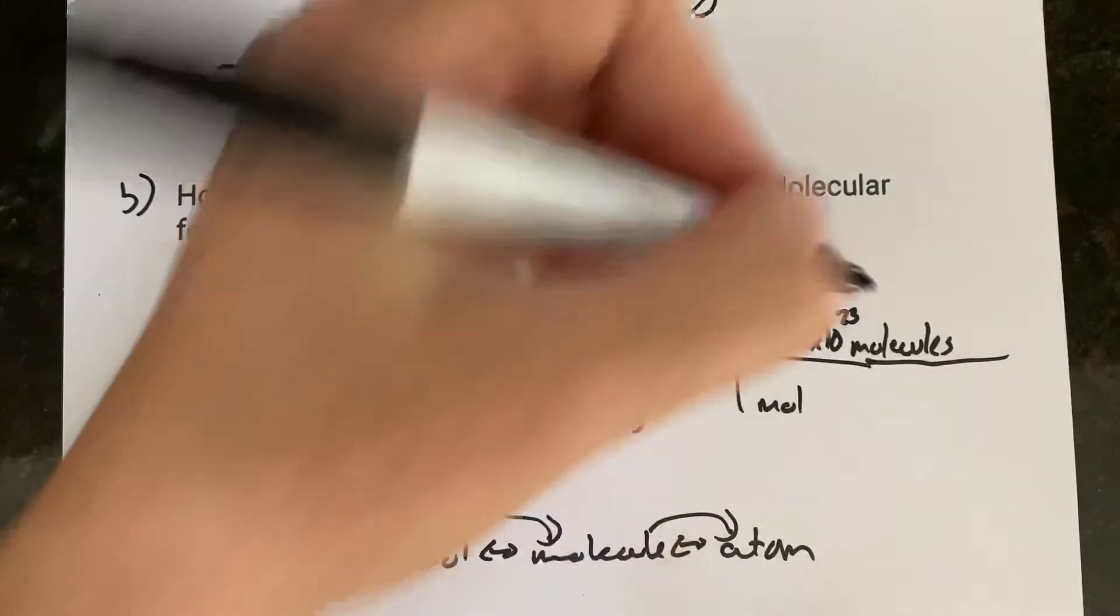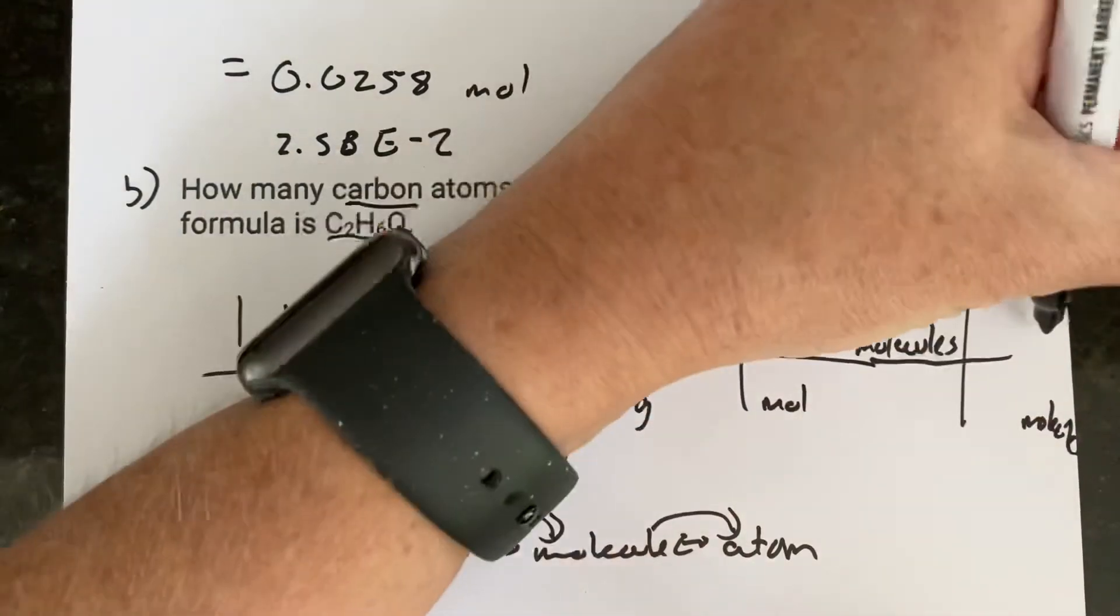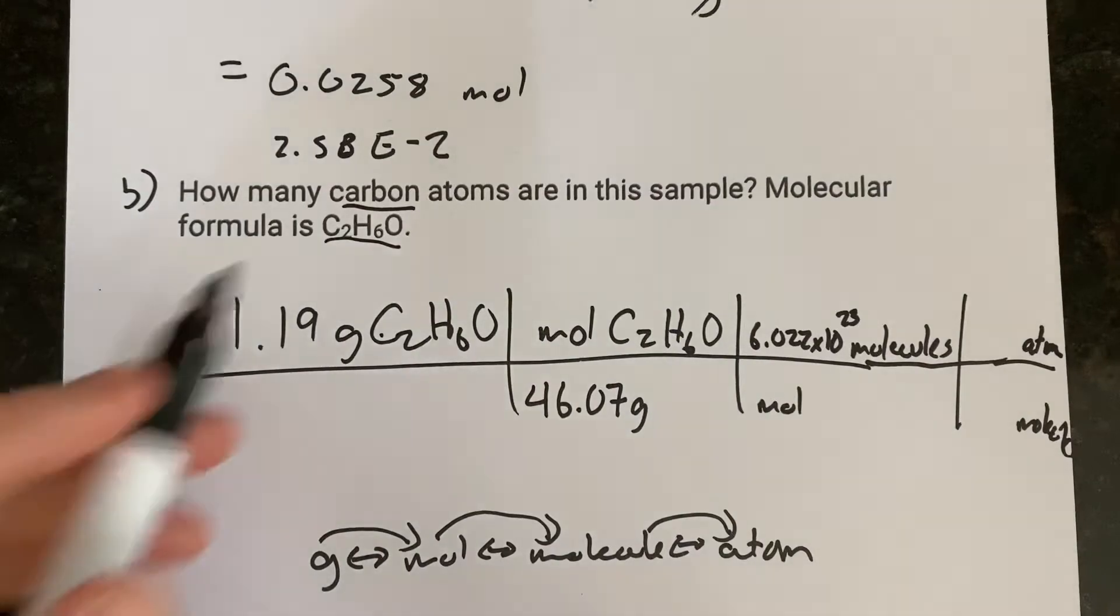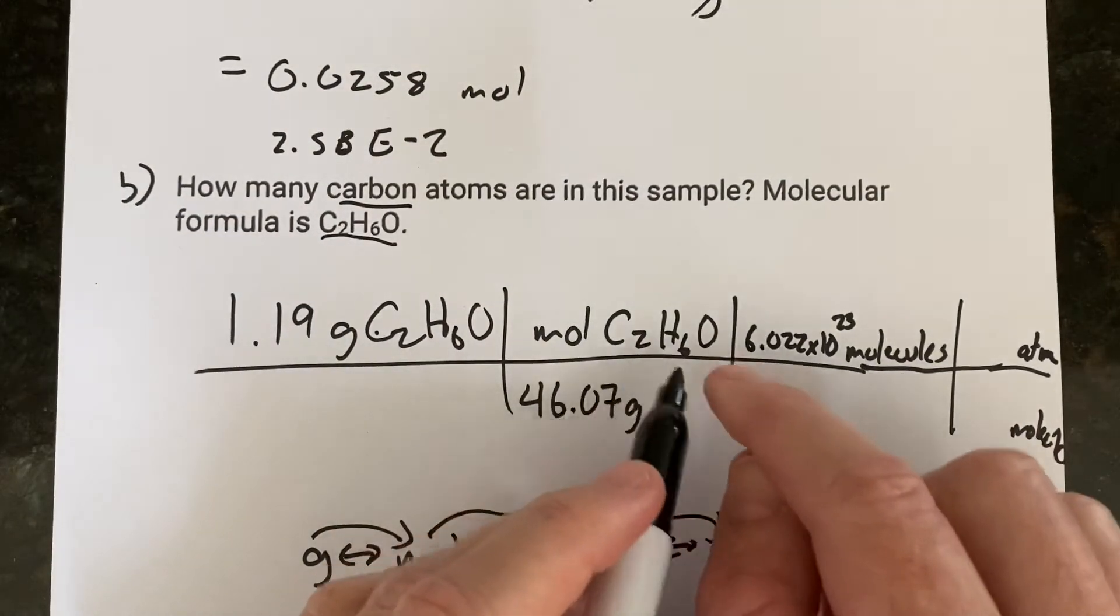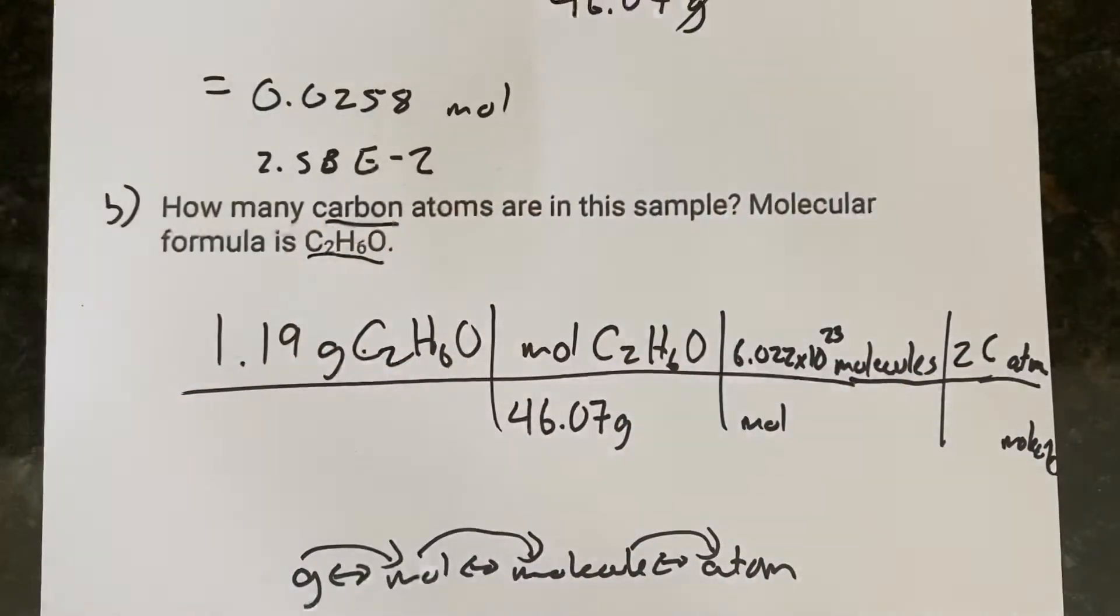All right, the next step, now we've got to go from molecule to atom. So you know down here is going to be molecule, and up here is going to be atom. And the question was how many carbon atoms. So in one molecule of this C2H6O, how many carbon atoms are there? There are two carbon atoms.